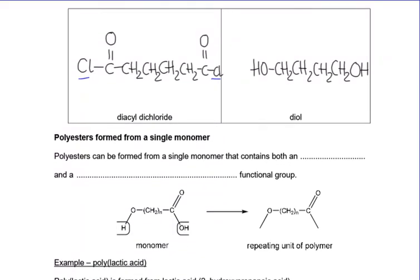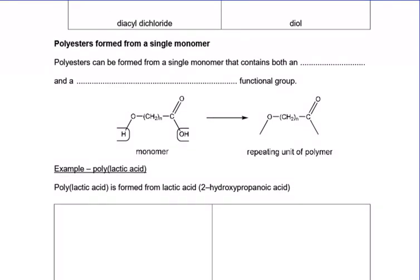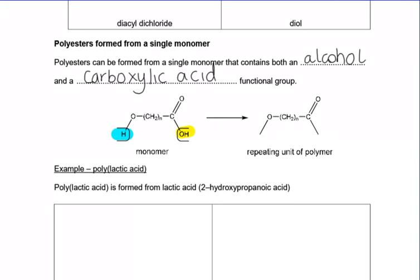There's one last case for polyesters: rather than having two separate molecules each with the functional groups, you can have one molecule that contains both the functional groups you need. So if we've got one monomer that contains both an alcohol and a carboxylic acid, we're going to be able to make a polymer just from that one monomer - it's going to polymerise with itself. We lose the OH from the carboxylic acid and the H from the alcohol to form ester bonds at the ends. The trailing bonds are the ester bonds; there's no middle ester bond because we used one monomer rather than two.